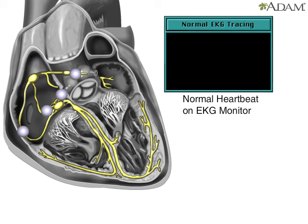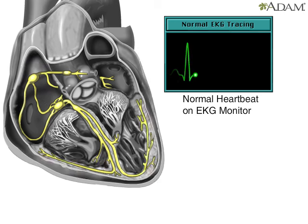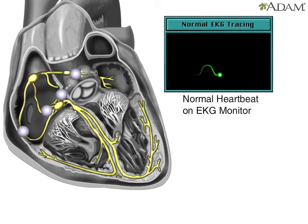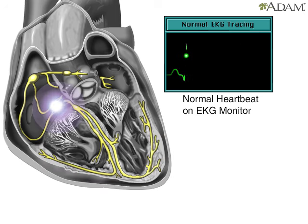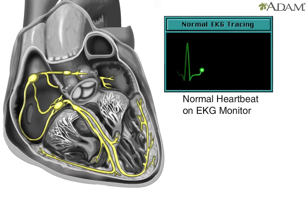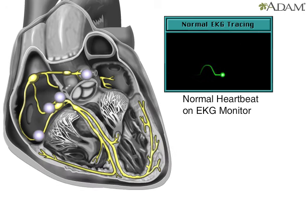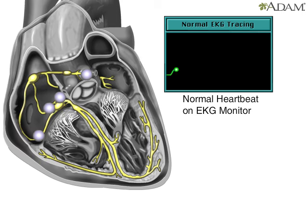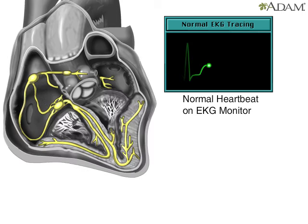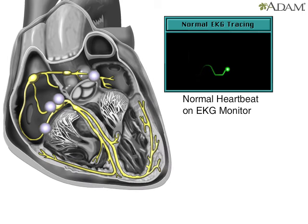This signal creates an electrical current that can be seen on a graph called an electrocardiogram, or EKG. Doctors use an EKG to see how well the cardiac conduction system works. Any changes on the EKG can mean serious problems.